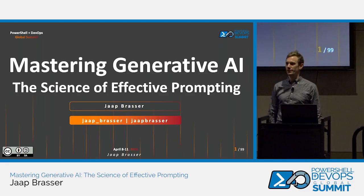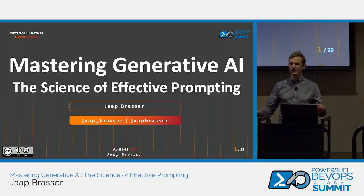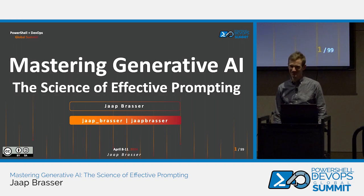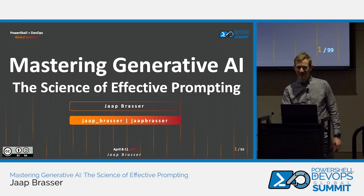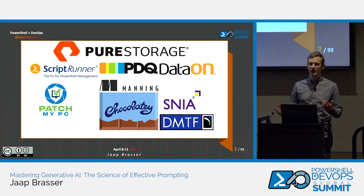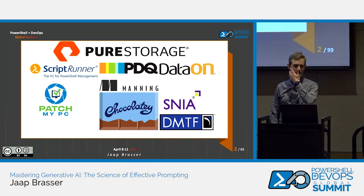Welcome to day three of the PowerShell on DevOps Summit. Nice that everyone is still here and still awake. Let's talk a bit about generative AI and how we can make it do less useless things. But before we get into it, a big thank you to our sponsors — we wouldn't be here otherwise.